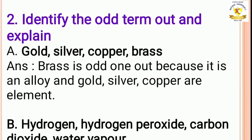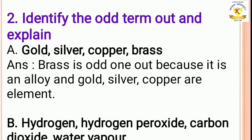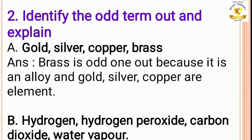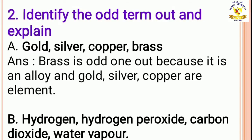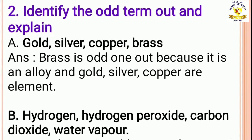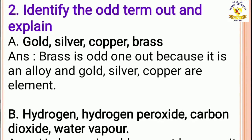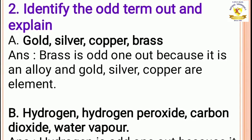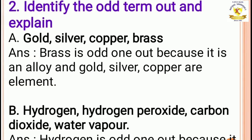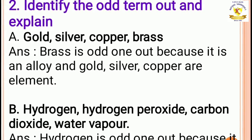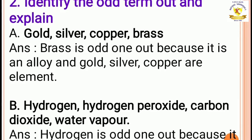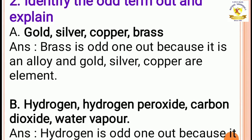Question number 2: identify the odd term out and explain. Gold, silver, copper, brass. The answer is brass is the odd one out because it is an alloy, and gold, silver and copper are elements.